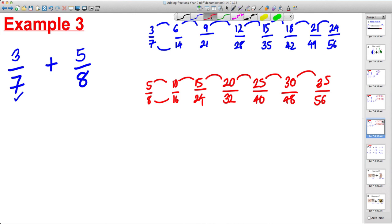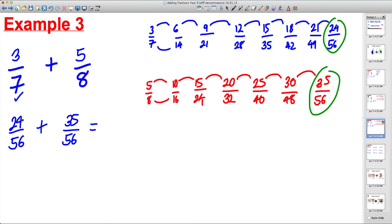At this point here we have a 56 on the bottom for each of these. So what we do is we replace 3 sevenths by 24 over 56. We replace 5 eighths by 35 over 56. And we just add them together. 24 over 56 plus 35 over 56 is actually 59 over 56. And we're done.